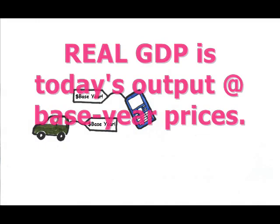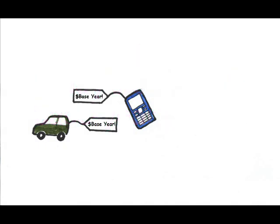We can think of real GDP as the sum of all the current final goods and services produced, but measured in base year prices. If that's real GDP, then we can think of nominal GDP as the sum of all the current final goods and services produced, measured in current year prices.